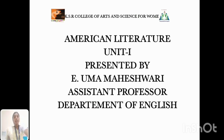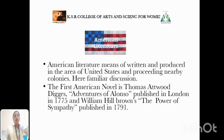American Literature has five units. The first unit discusses about poetry, the second unit prose, the third unit drama, the fourth unit novel, and the fifth unit short story.